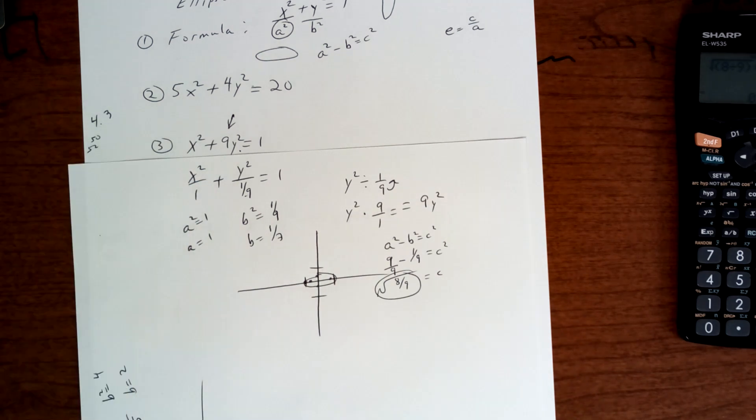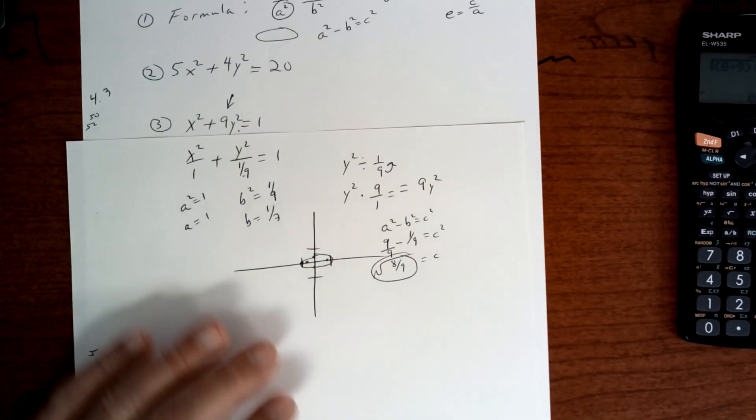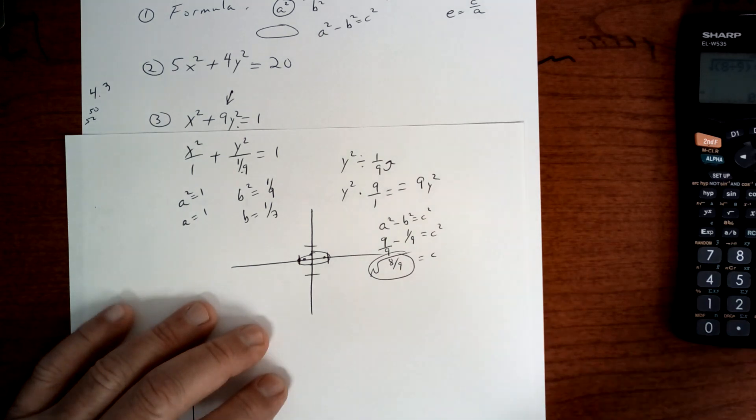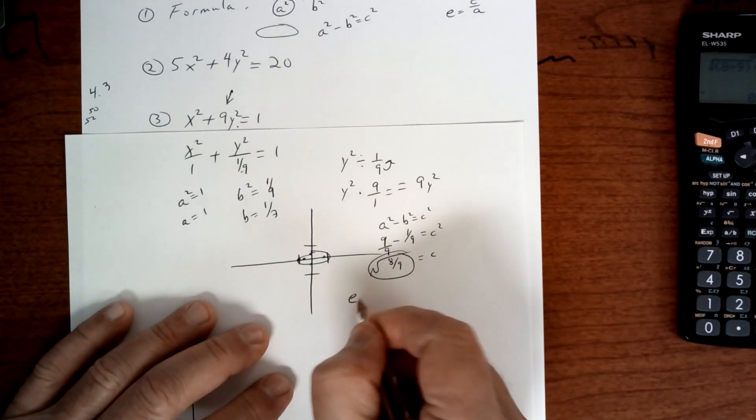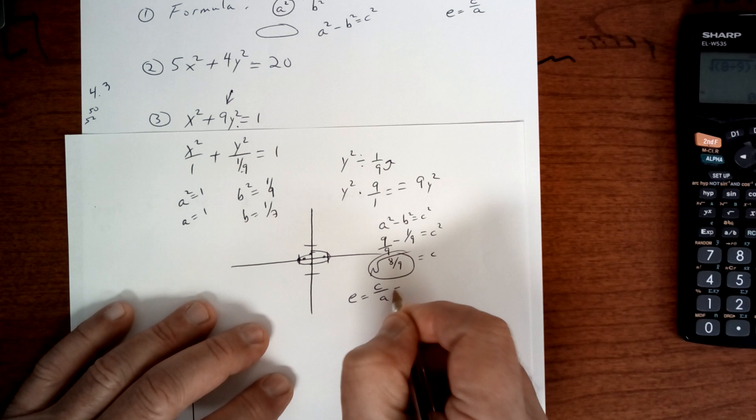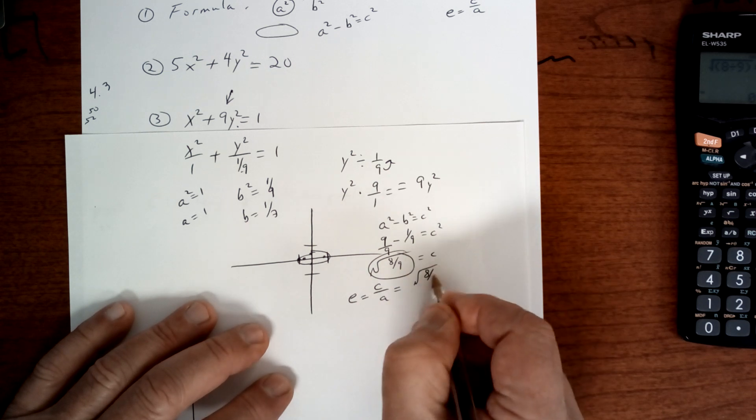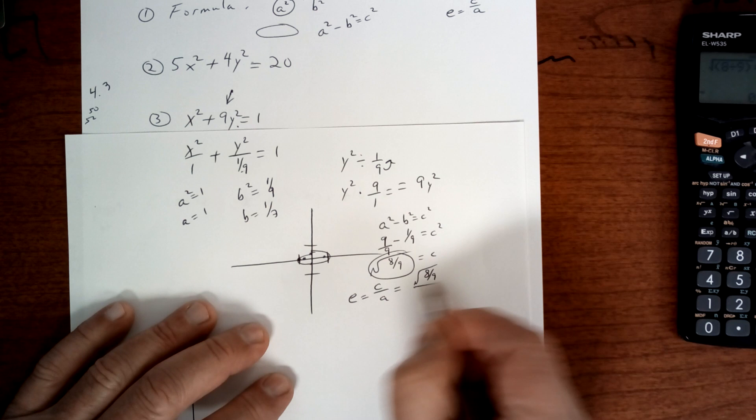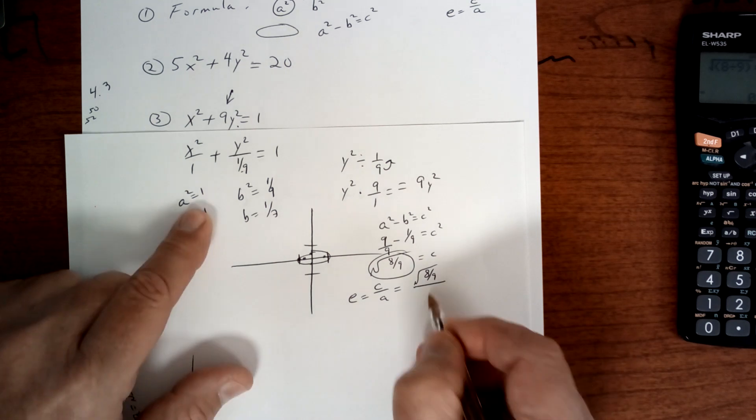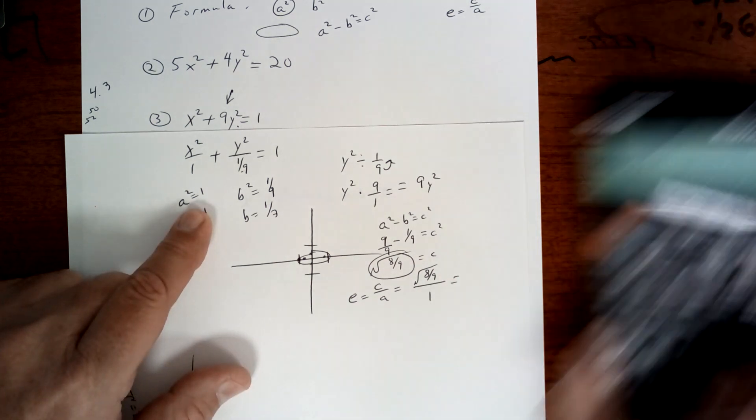To find the eccentricity, what you're going to do, the eccentricity equals c over a. Well, c is the square root of 8 over 9, which was whatever I just said, divided by a, which is 1. So the eccentricity is going to be 0.94.